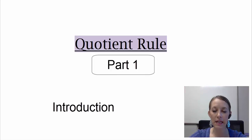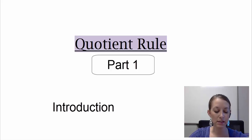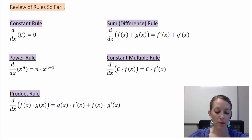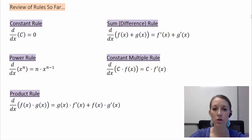We are still learning new techniques of taking the derivative. We have learned quite a few techniques so far, but we have yet to learn two more major techniques. The first is called the quotient rule. Before I tell you what it is, let us review the techniques we know: the constant rule, power rule, sum rule, constant multiple rule, and the product rule from the last section. The quotient rule is going to follow the product rule very similarly, so if you have the product rule memorized, it should be no big deal to adjust it for the quotient rule.